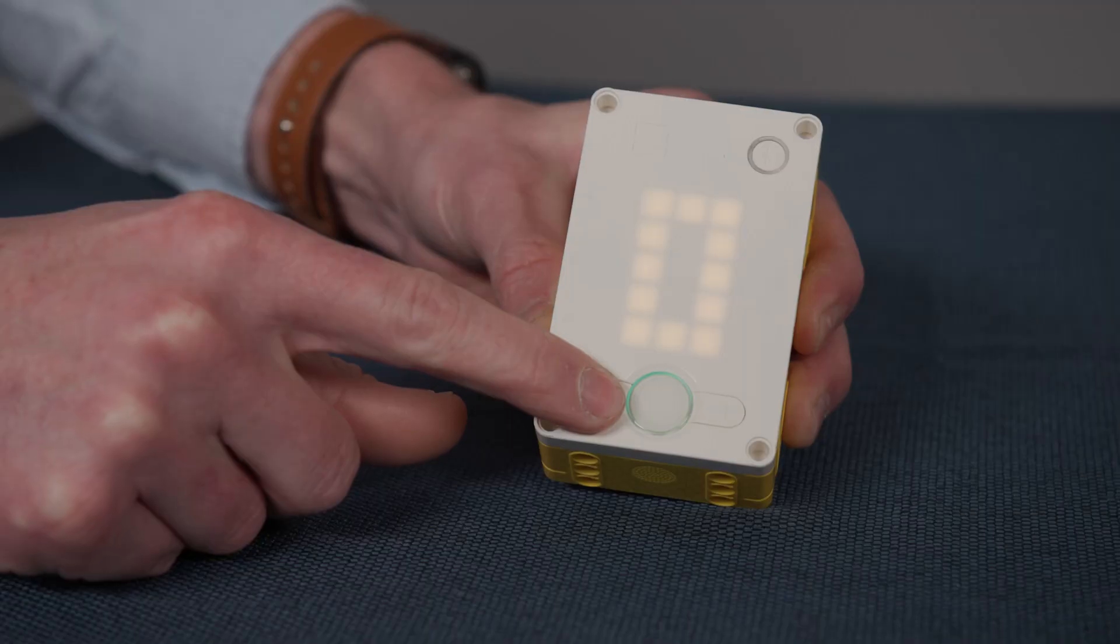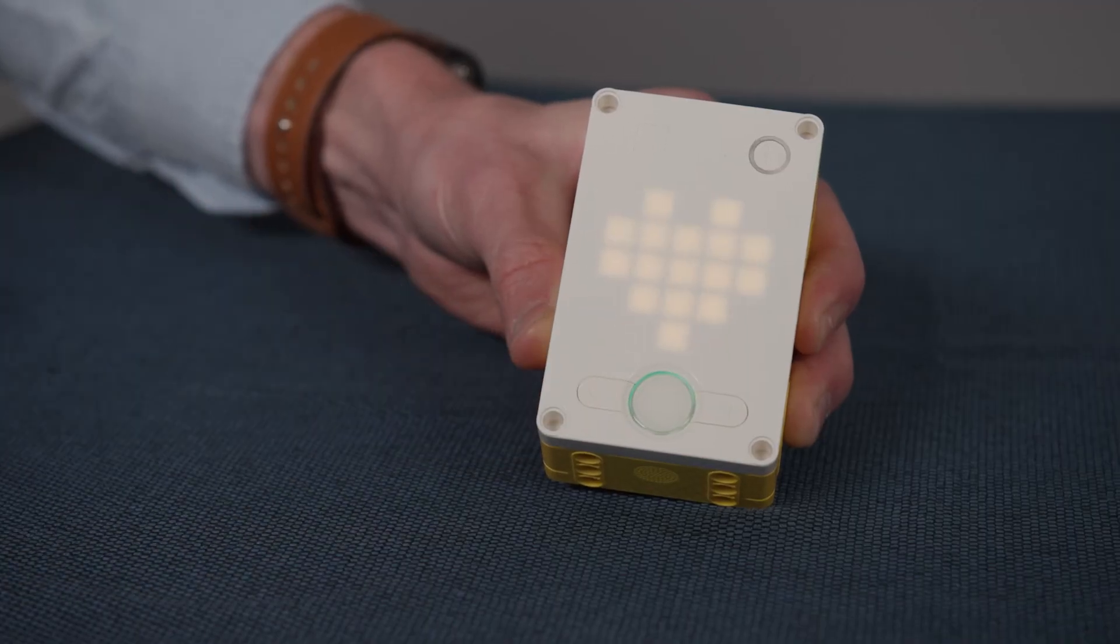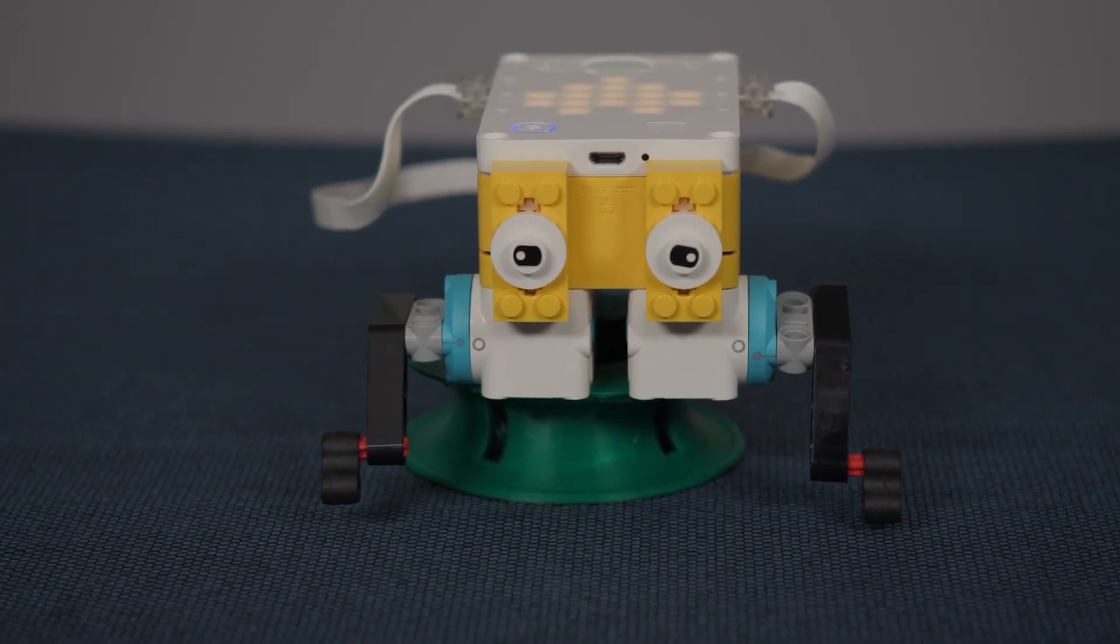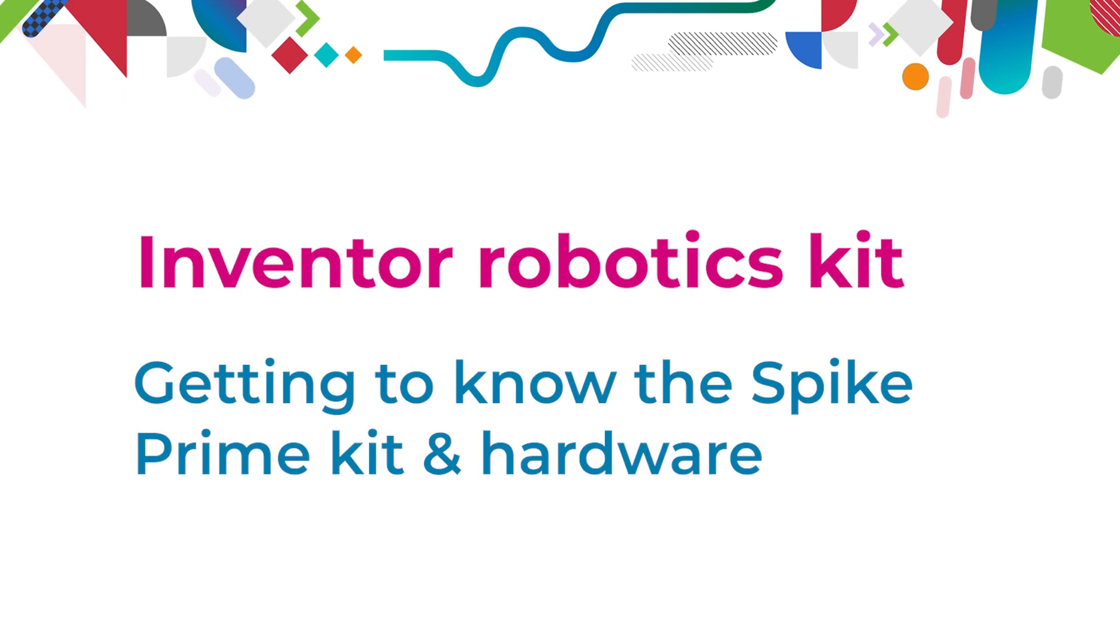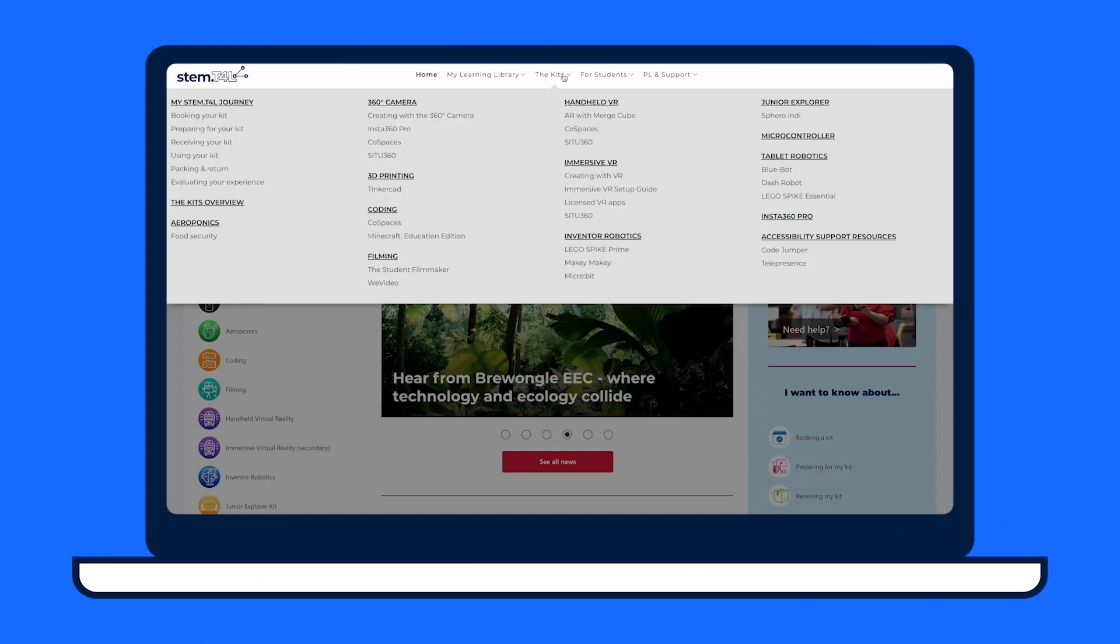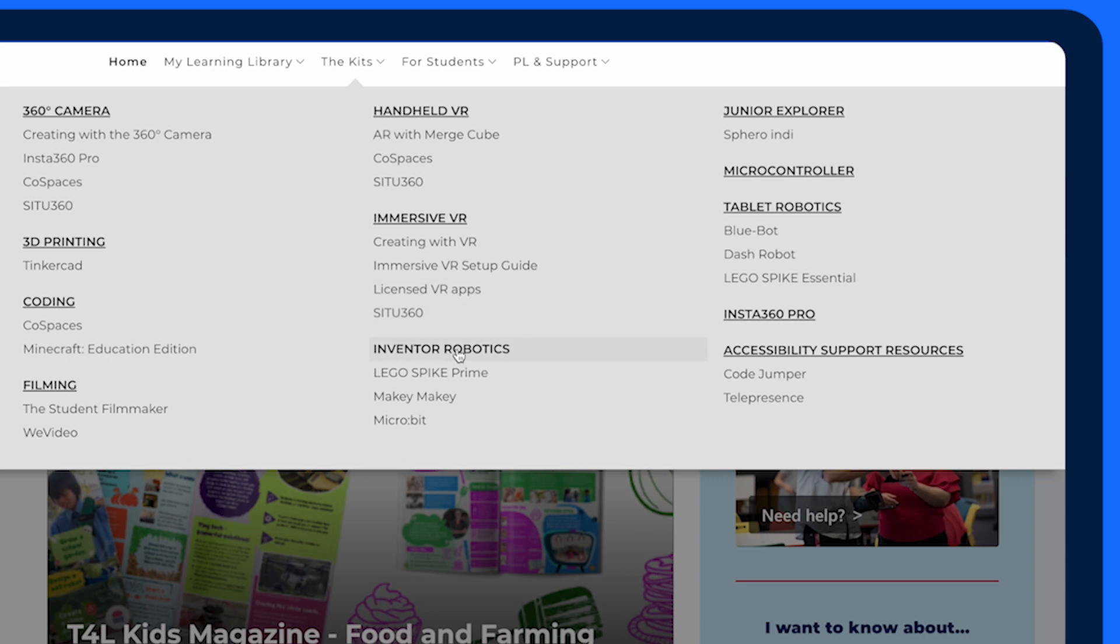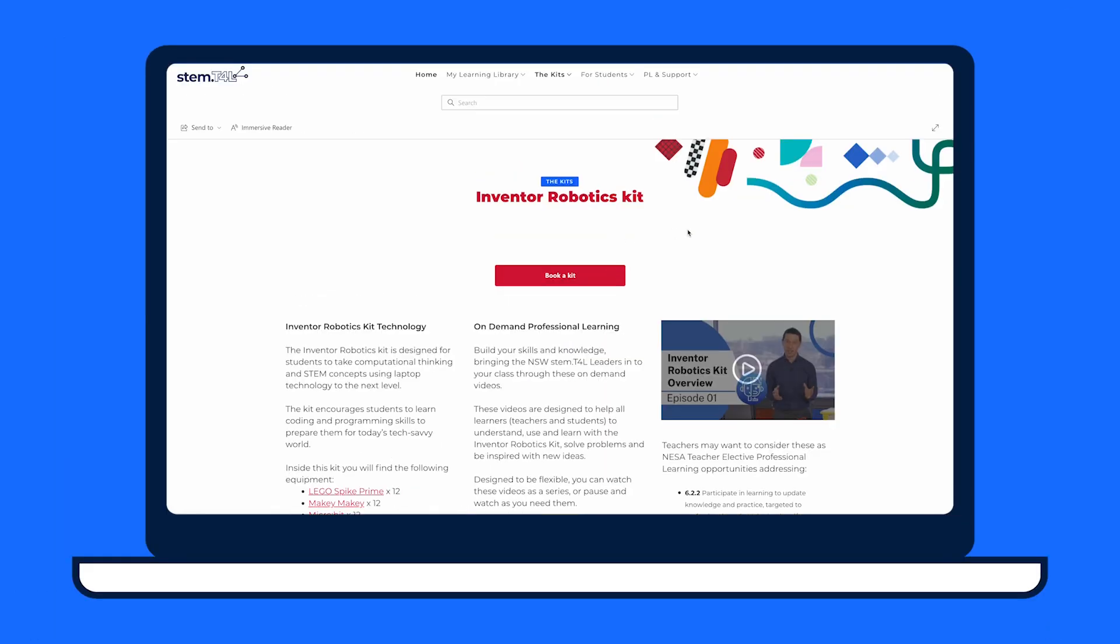Hey, it's Tim here. Let's take a look at the LEGO Education Spike Prime hardware. This belongs to the Inventor Robotics Kit, which is available through the stem.t4l page.